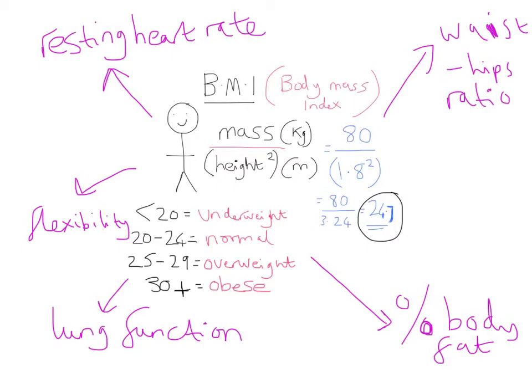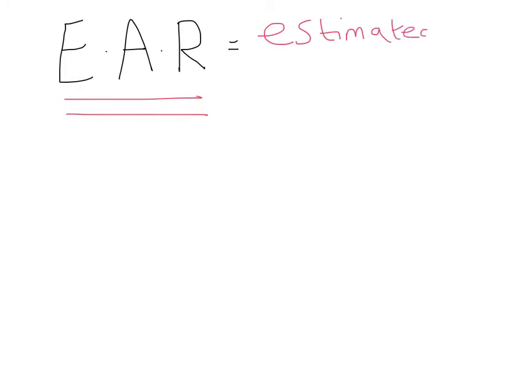So what I'd like to talk about now is something called the EAR. The EAR is an estimated average requirement. So the EAR is really considered to be the average requirement of the amount of a food group that someone should be taking in a day, roughly, to be healthy. It's almost like the minimum requirement, if you like.